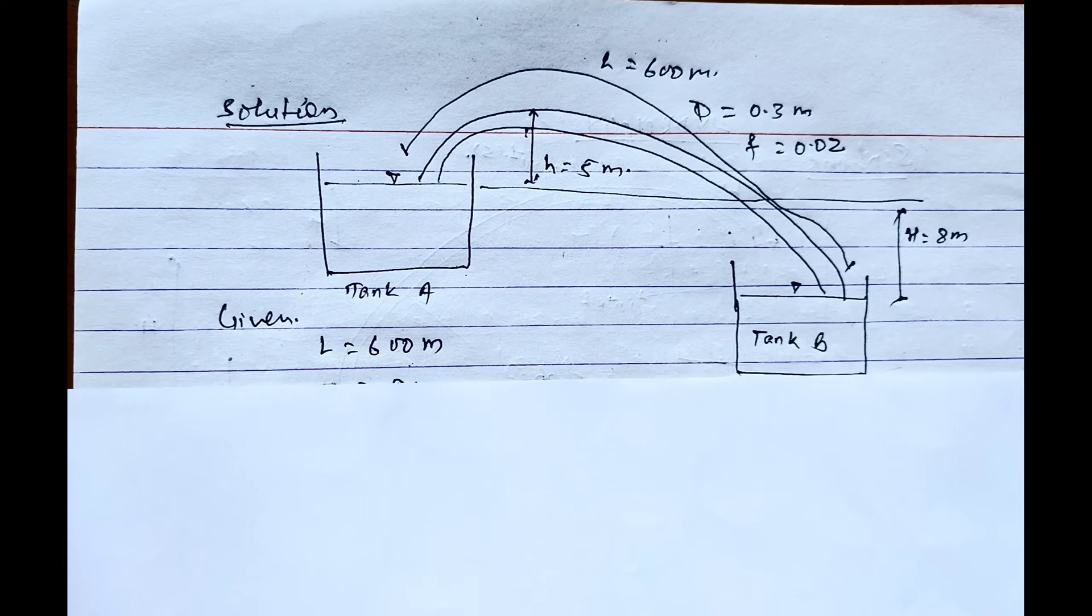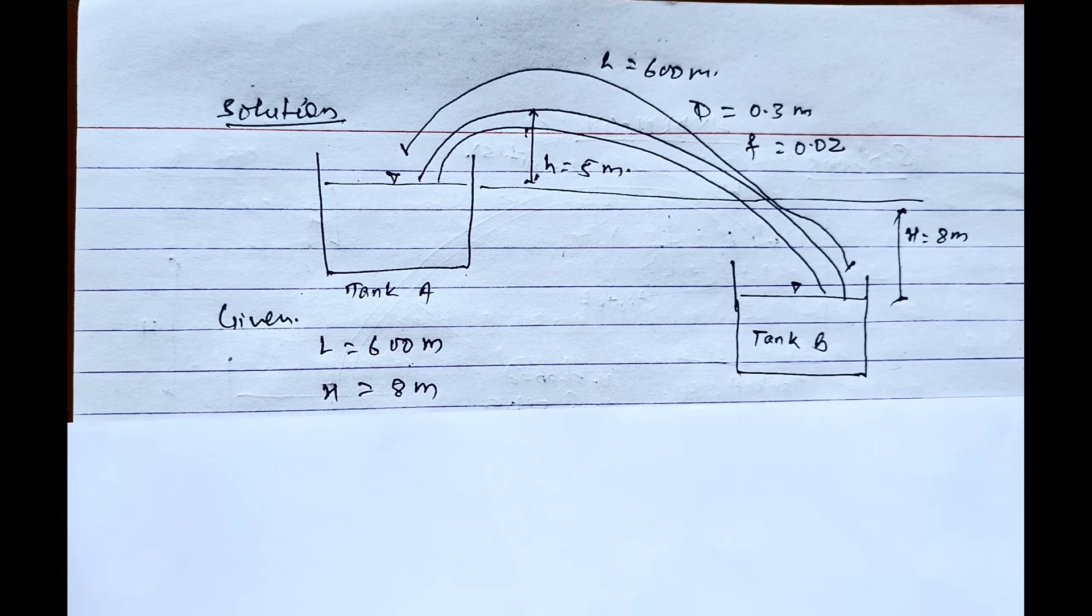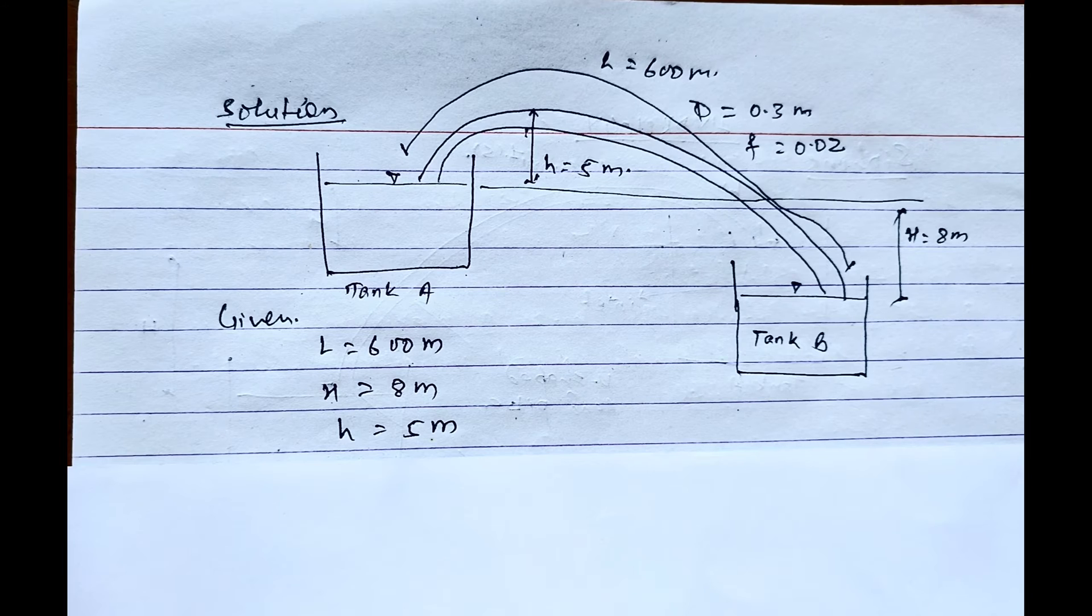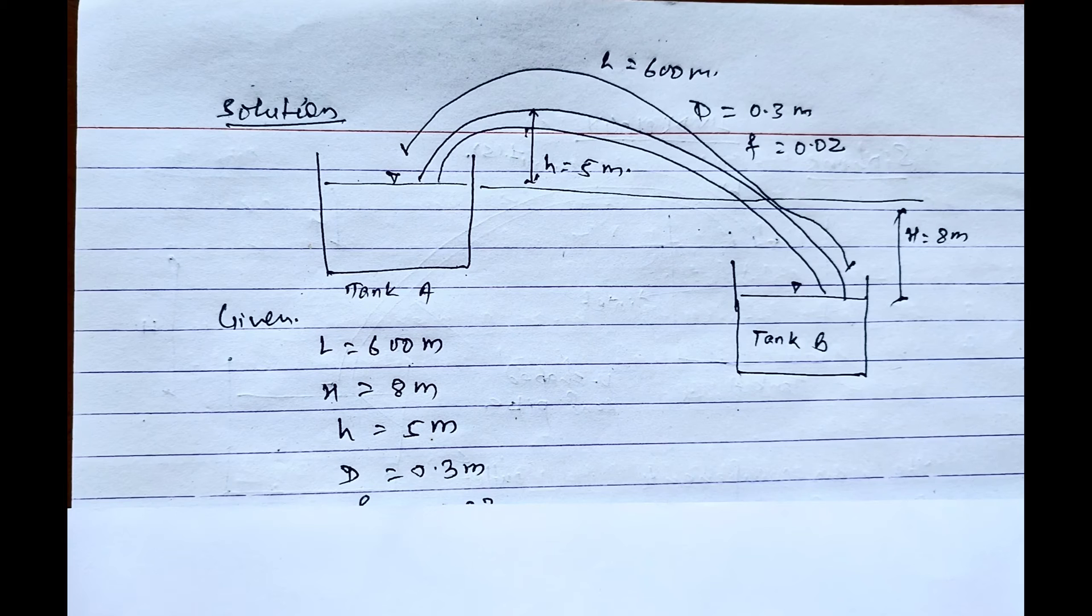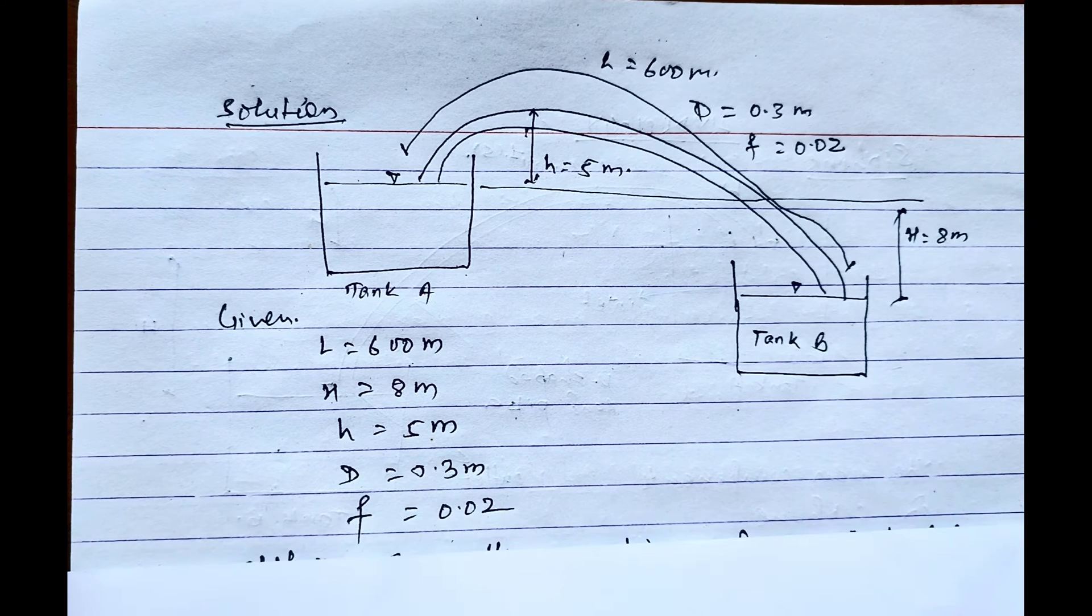Length of the siphon is 600 meters, height is 8 meters, height above the reservoir to the summit of siphon is 5 meters, and diameter of the siphon is 0.3 meters, and the frictional loss coefficient is 0.02.